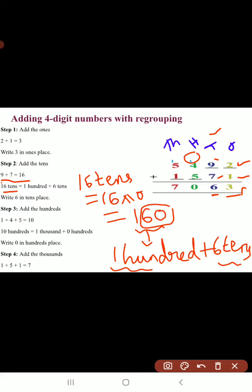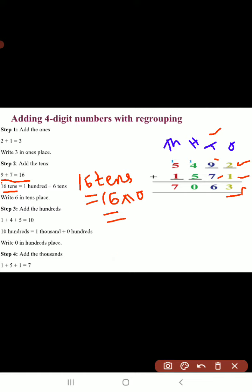Now regroup the 100's. 1 plus 4, 5. 5 plus 5, 10. So, there are 10 100's.